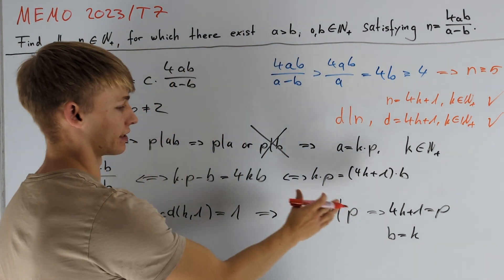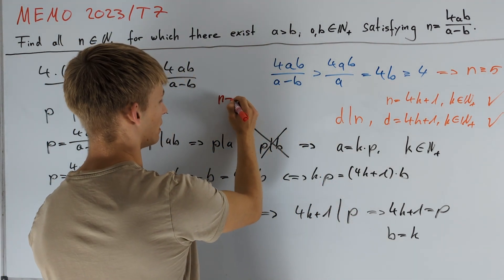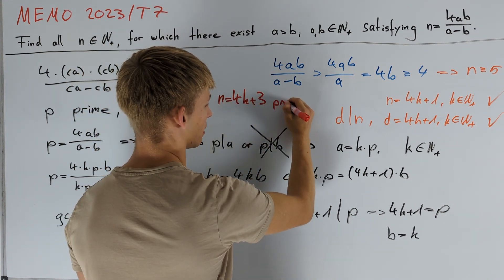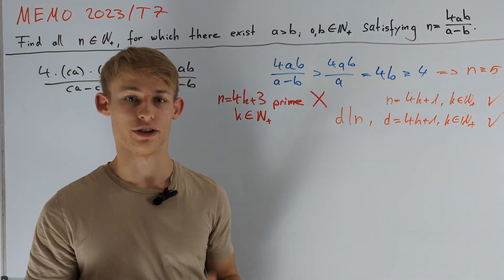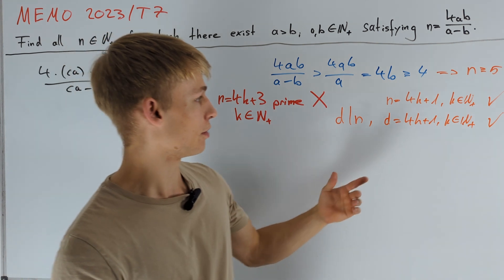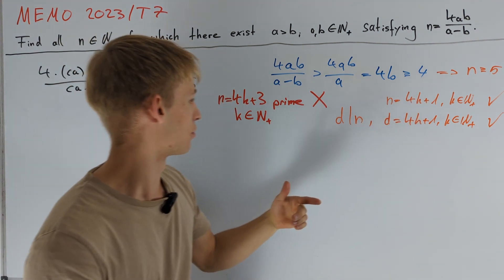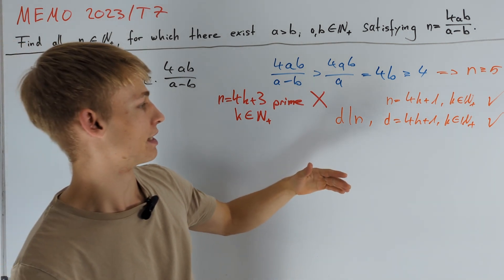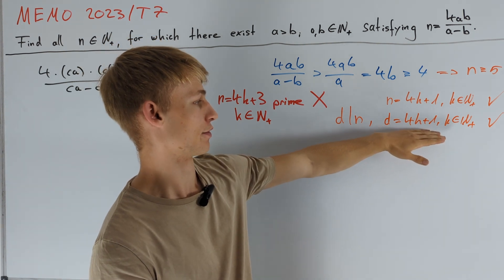The other result from this argument is that if n equals a prime of the form 4k plus 3, then this is not a solution. We have now dealt with all odd integers: if n is congruent to 1 mod 4 we are in the working case, if n is congruent to 3 mod 4 and prime we are in the failing case, and otherwise we can find a divisor d of n satisfying d equals 4k plus 1.